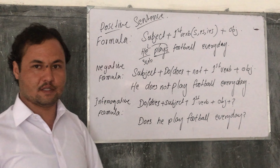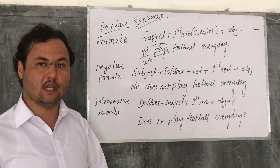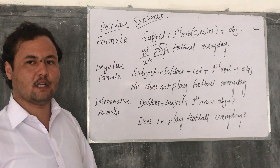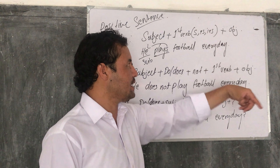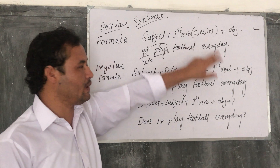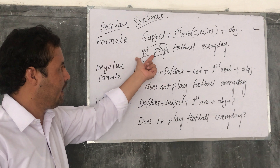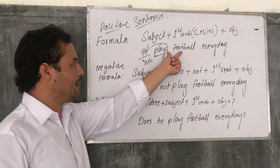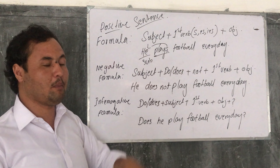Here are the formulas for sentences. We have three types: positive, negative, and interrogative. For a positive sentence, the formula is: Subject + first form of the verb + s/es + object. The s or es is added to the verb when the subject is a singular noun. For example: 'He plays football every day.' If the subject is plural, we do not add s/es — for example: 'They play football every day.'